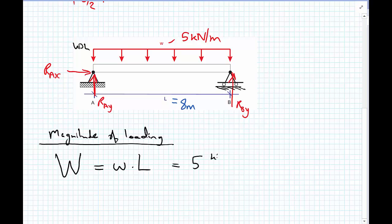So, we have an intensity, and that's 5 kilonewtons per meter, multiplied by a length of 8 meters. So, meters, meters, gives us a total loading of 40 kilonewtons.